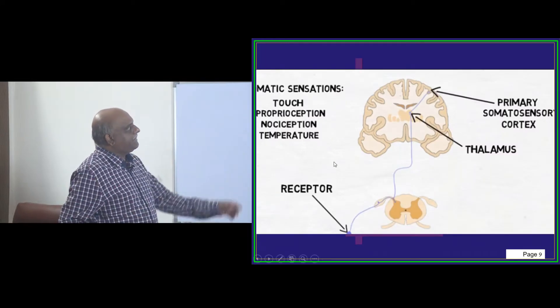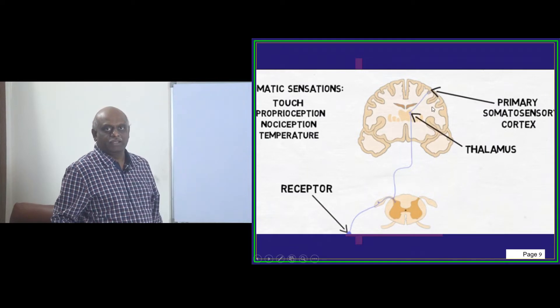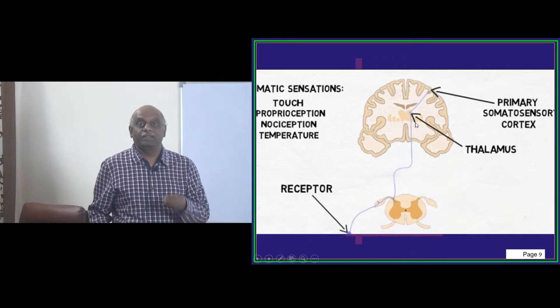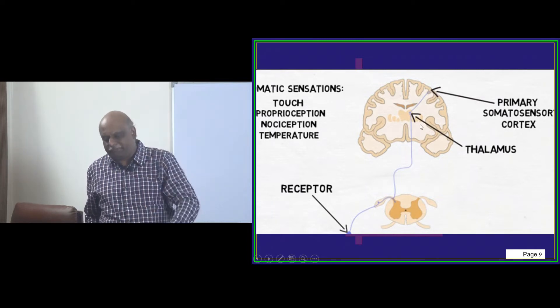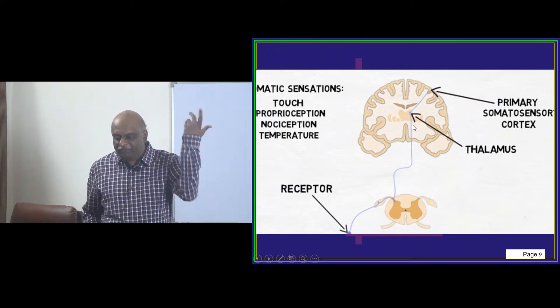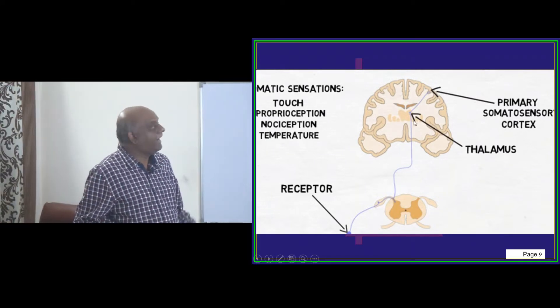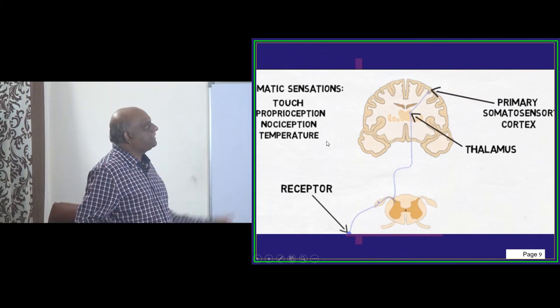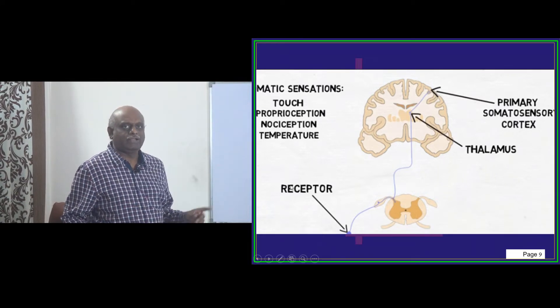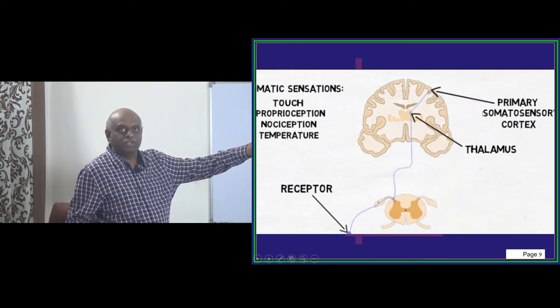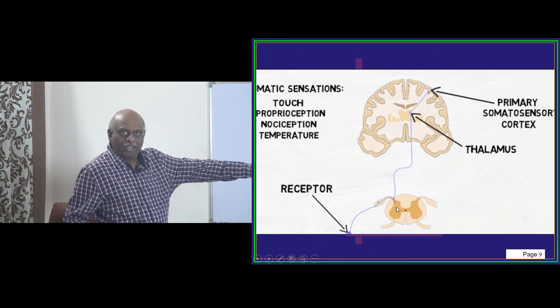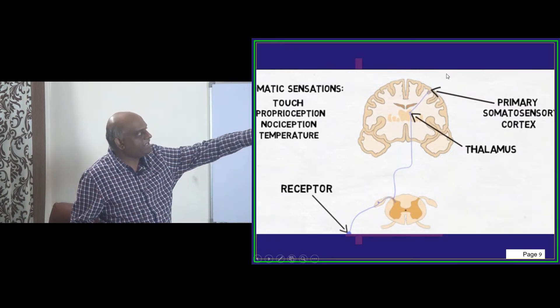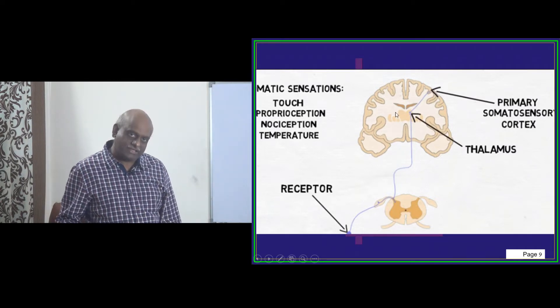So doctor, this is the primary somatosensory cortex and it is in close relationship with the thalamus. Thalamus is the place where all sensation going up, the pain, temperature, touch, vibration, everything, will ultimately get reported in the thalamus and from the thalamus, they will all get relayed to the primary somatosensory cortex. So the touch, proprioception, nociception, temperature, they are all the somatic sensations. From the receptors in the periphery, they reach the spinal cord and the anterolateral spinothalamic tract carries them all the way to reach the thalamus. From the thalamus, they reach the primary somatosensory cortex is what you have to remember.